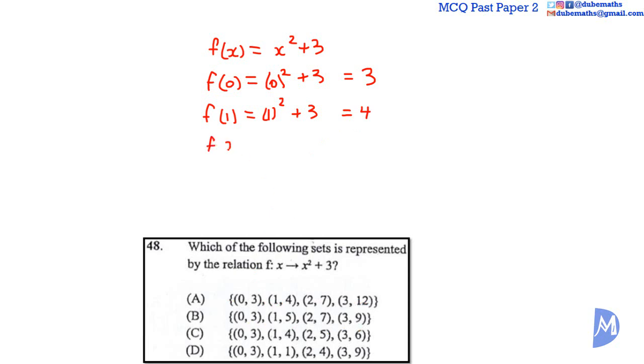F of 2 is equal to 2 squared plus 3. 2 squared is 4. 4 plus 3 is equal to 7. So 2, 7 is the third point. The answer is A. And of course, F of 3 is equal to 3 squared plus 3. 3 squared is 9. 9 plus 3 is equal to 12. 3, 12.